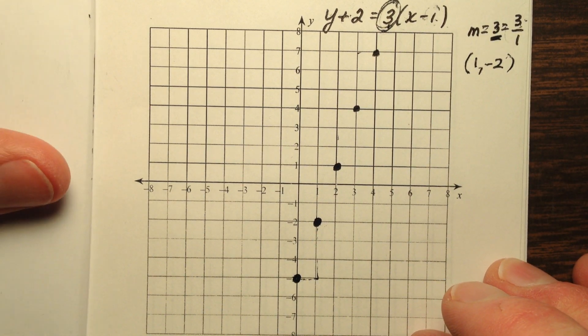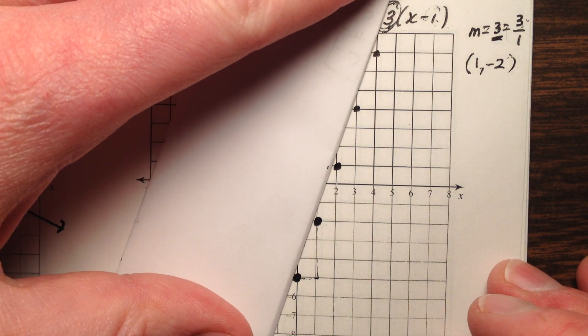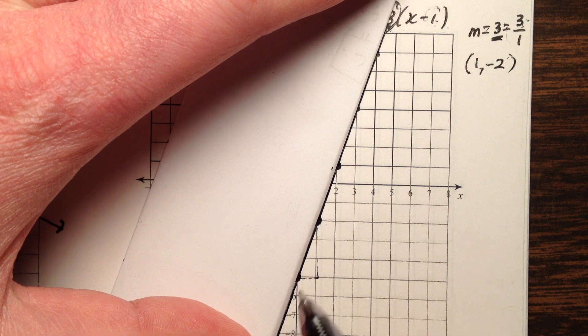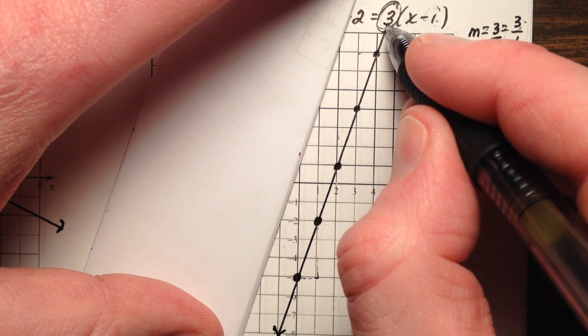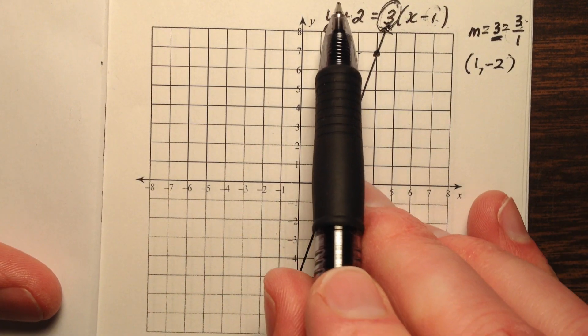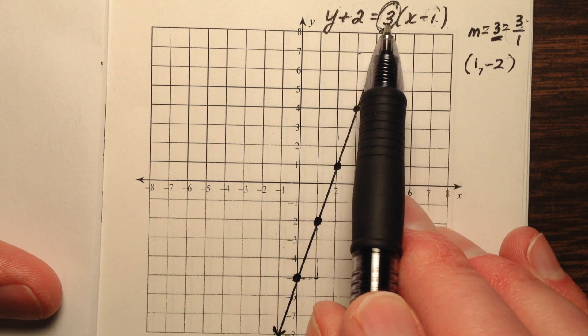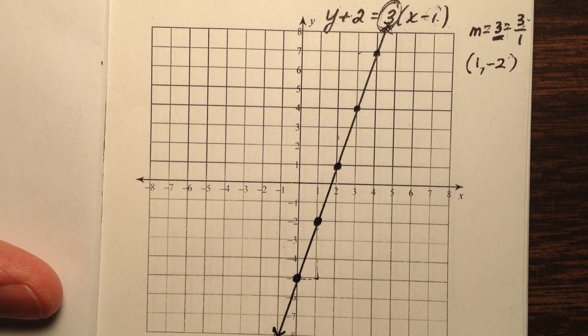So let's go ahead and grab our straight edge. Let's go ahead and graph this line. So here is the graph of the line given to us by the equation in point-slope form y plus 2 equals 3 times the quantity x minus 1.